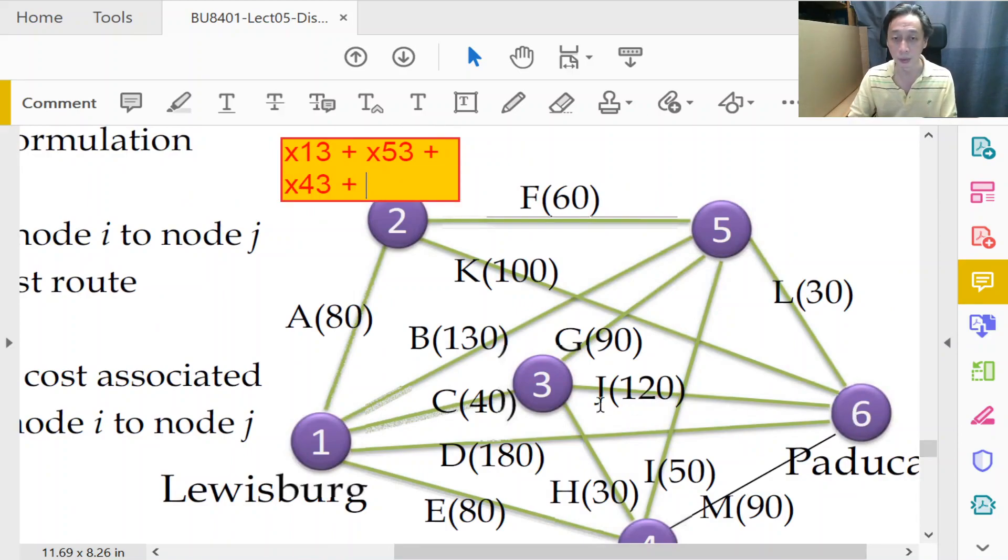And if we were at node six will we be sent to three? Answer is no because when we are at six we are done, we shouldn't induce the solver or the model to come back out again.